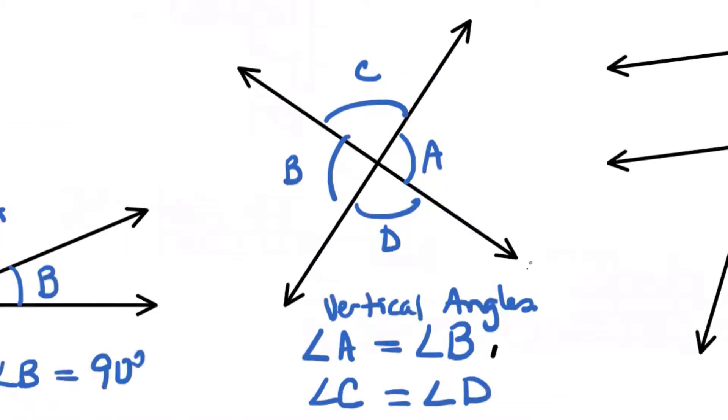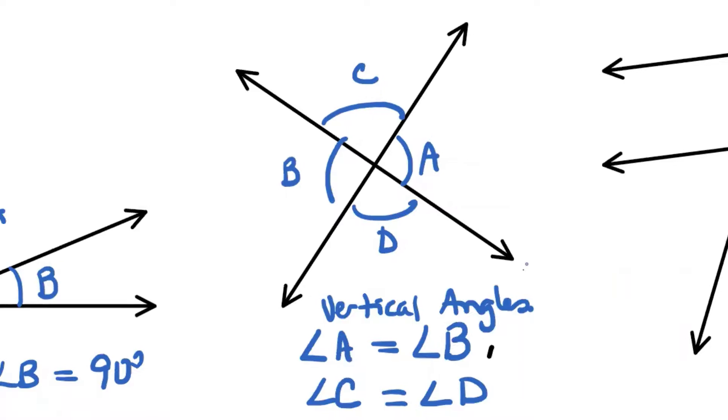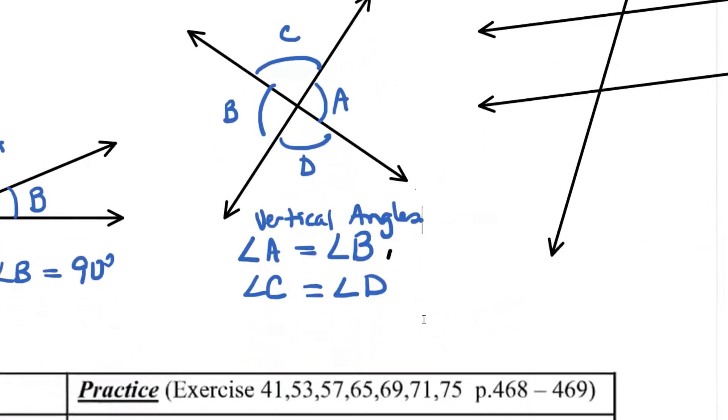There are other relationships hidden within here as well. For example, what would you get if you added angle A plus angle C? A straight angle, which is 180 degrees. So you also could have many, you could come up with several equations like that, right?